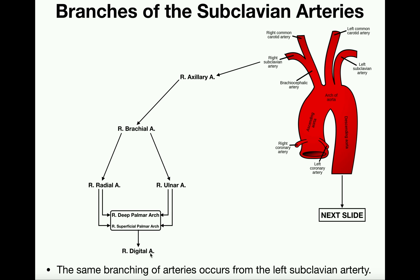So the path from the right subclavian artery through the right arm is: right subclavian artery → right axillary artery (above the armpit) → right brachial artery (proximal arm) → right radial and right ulnar arteries (forearm). These two forearm arteries then meet back up in the palmar region to form the right palmar arch — both deep and superficial — which then diverge into the right digital arteries serving the fingers.